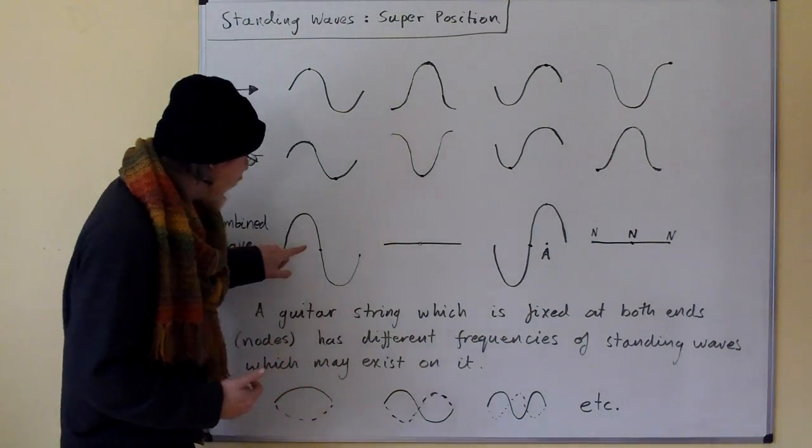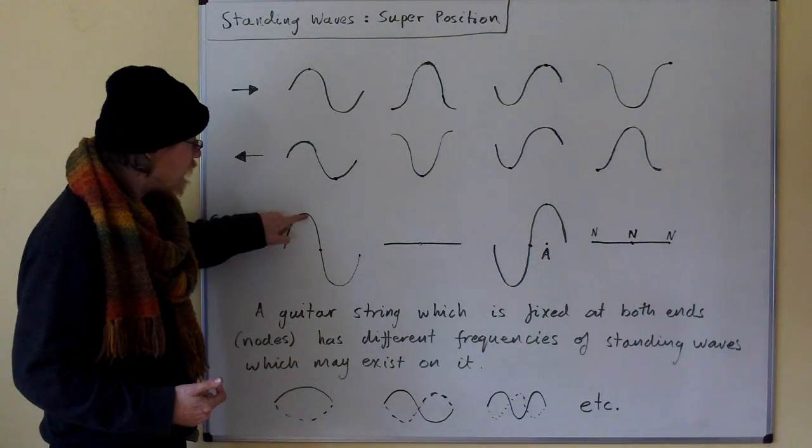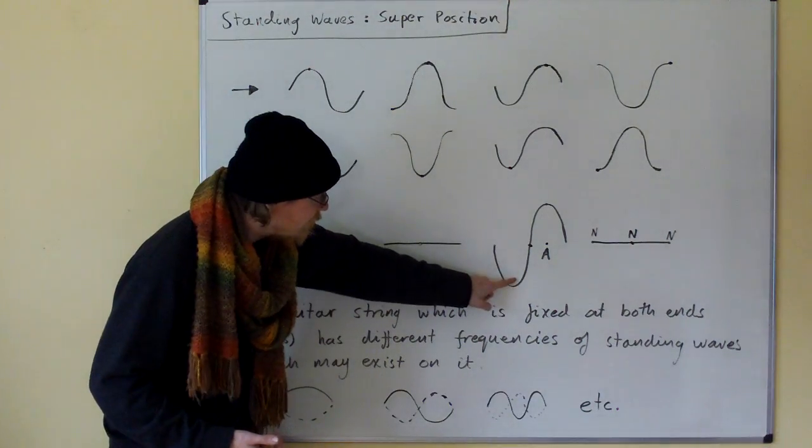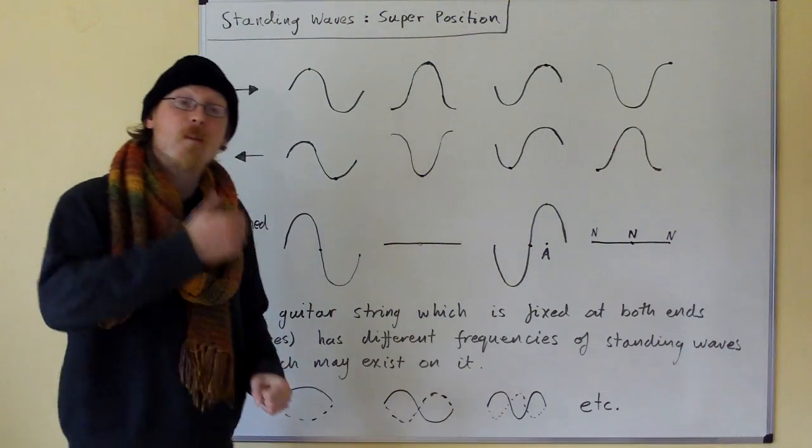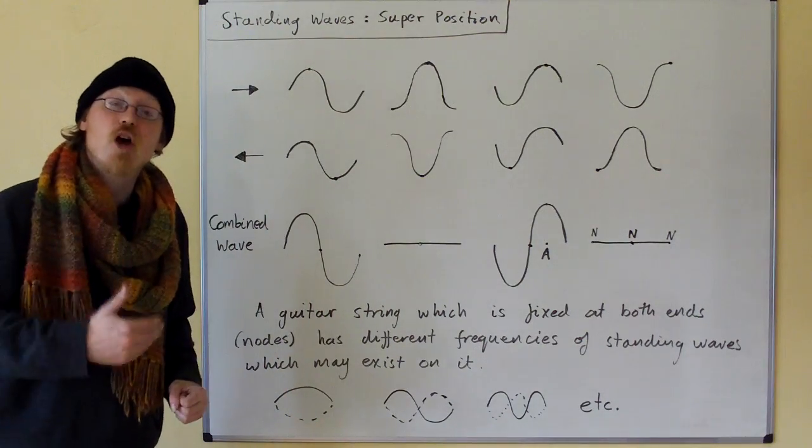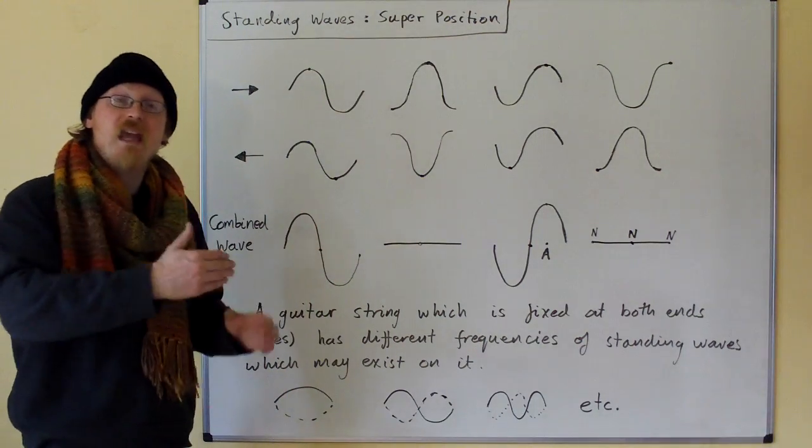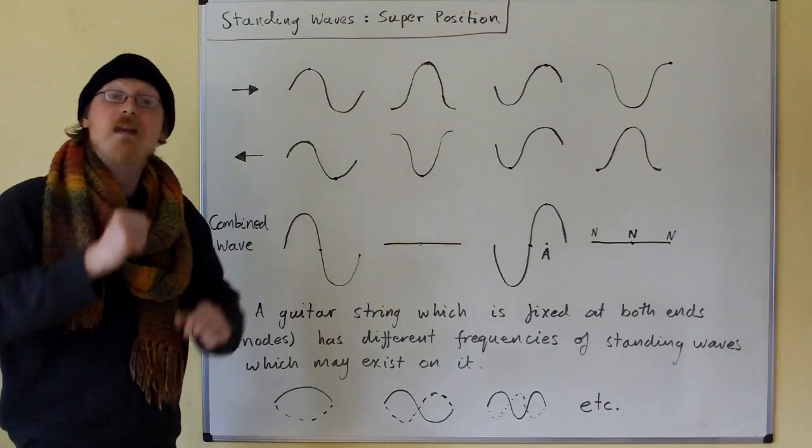Between the nodes you have things called antinodes where the disturbance is maximum. This antinode vibrates up to the top and then down to the bottom, and this one vibrates down to the bottom and then up to the top, and so on. But the wave does not travel through the medium; it vibrates up and down in place.